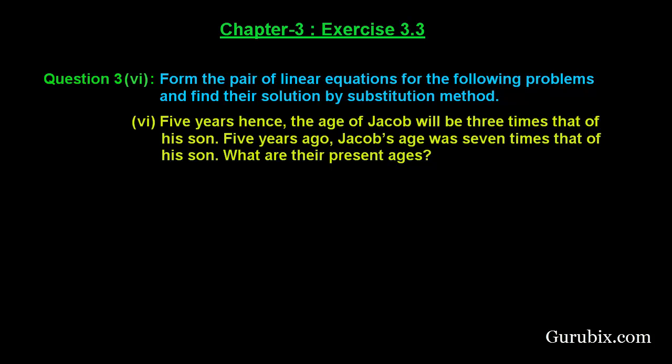Welcome friends. Let us solve the sixth part of question number 3 of exercise 3.3 of chapter 3. The question says: form the pair of linear equations for the following problem and find the solution by substitution method. The problem is: five years hence, the age of Jacob will be three times that of his son. Five years ago, Jacob's age was seven times that of his son. What are their present ages?